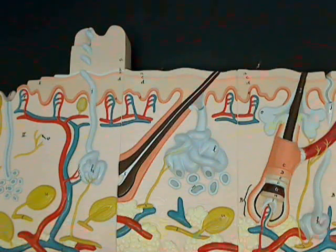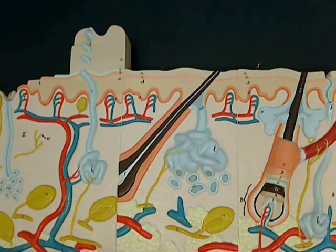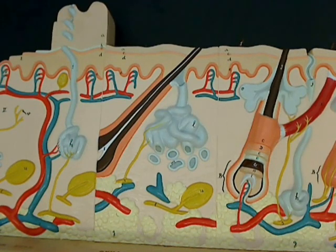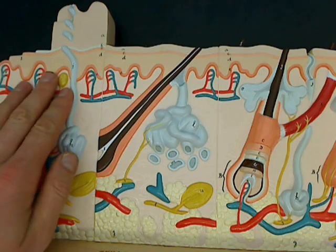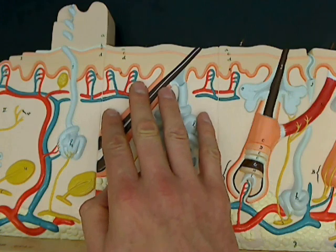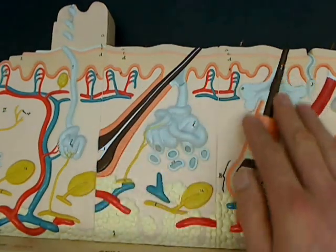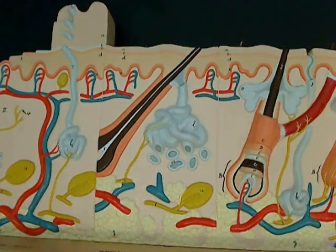Welcome once again to Anatomy and Physiology with Dr. Wren at Glen Oaks Community College. For this short video, I'd like to show you the anatomy of this skin model. This is the largest skin model in the lab, and it's actually representing three different types of skin. On this side is thick skin. In the middle is the skin you might find in the axillary region under your armpit or in your groin. And then on the right hand side is regular thin skin, the kind you might see on the back of your hand or on your arm or leg.